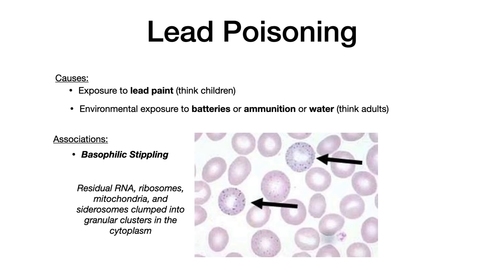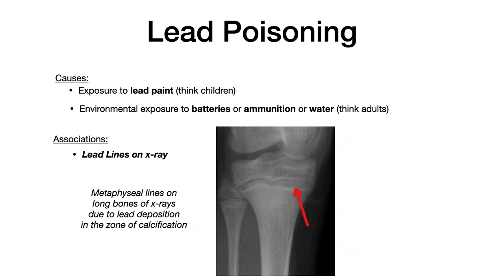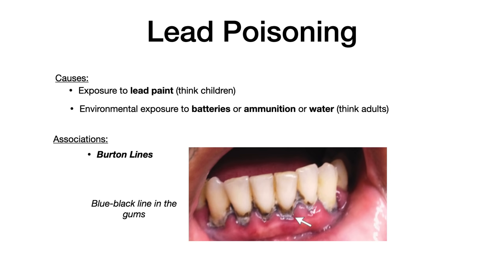Two more associations to know for lead poisoning: lead lines and Burton lines. Lead lines appear on x-ray of long bones — dense lines in the metaphyseal region due to lead deposition in the zone of calcification. A Burton line is a blue-black discoloration along the base of the gums. If you see an x-ray of long bones with those lines, a cell with basophilic stippling, or an image of teeth — think lead poisoning.